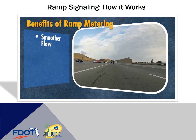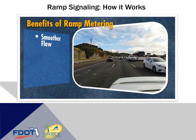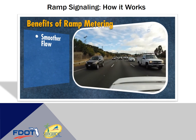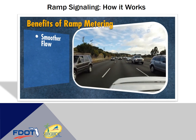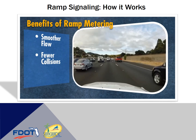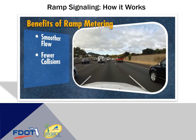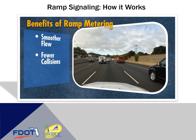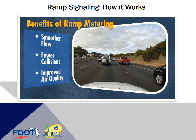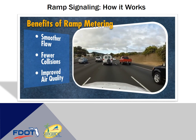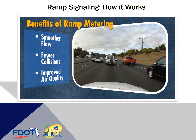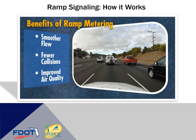Ramp metering smooths out the flow of traffic by balancing conflicting traffic demands. A smoother traffic flow is safer. With less merging and weaving traffic, collisions are reduced by up to 50%. Reduced congestion also improves air quality, and adjacent city streets benefit as well because fewer drivers seek alternate routes.